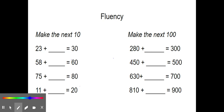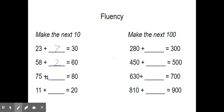Now let's do some fluency. Today we are going to be making the next ten and making the next hundred. Pause the video while you quickly think or write down the missing numbers, then we'll go over it together. 23 plus blank equals 30 — how many more ones does 23 need to make 30? 3 and 7 are partners to 10. 58 plus blank equals 60 — 8 and 2 are partners, so I need two more ones. 75 plus blank equals 80 — 5 and 5 are partners. 11 plus blank equals 20 — there's one 1, and we need 9 more ones. Great job.